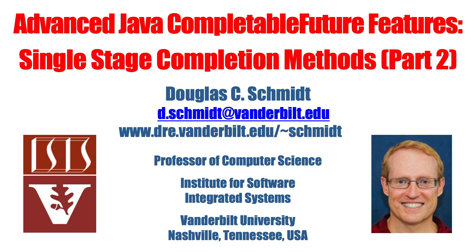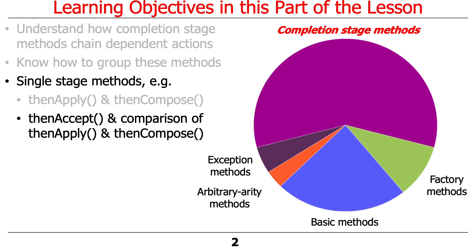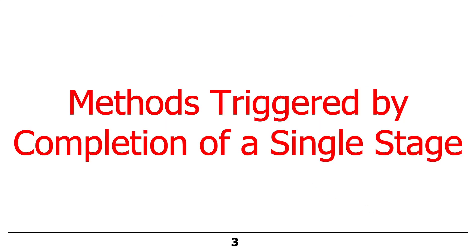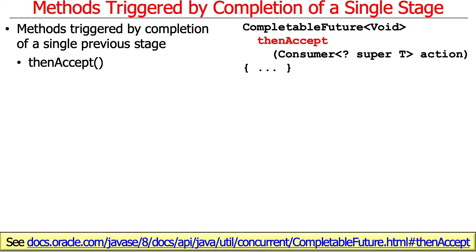All right, let's talk now about part two of the single-stage completion methods. This will cover thenAccept, and then we'll compare thenApply and thenCompose. You'll see how thenCompose cleans things up by flattening and denesting completable futures. But first, let's talk about thenAccept.